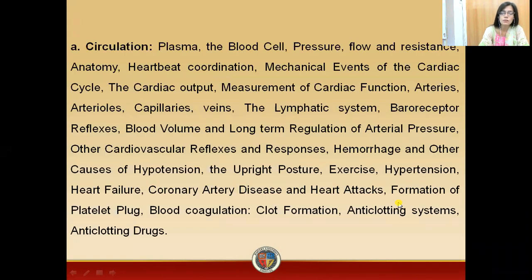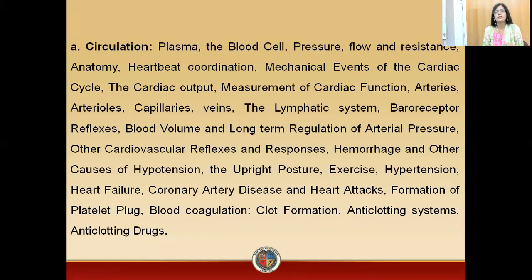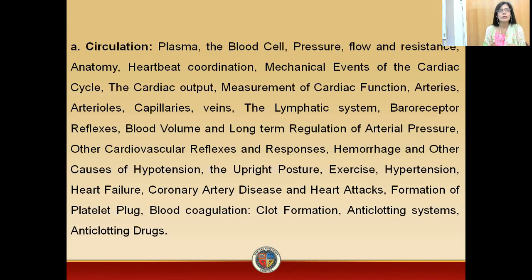The systems we are going to study in Physiology B: first is the circulatory system. In circulation, we will particularly study what are the cells of the body, what is plasma, and we will have a general discussion on fluid compartments. We will see what is blood pressure, then we will discuss the heart and study the anatomy of the heart.